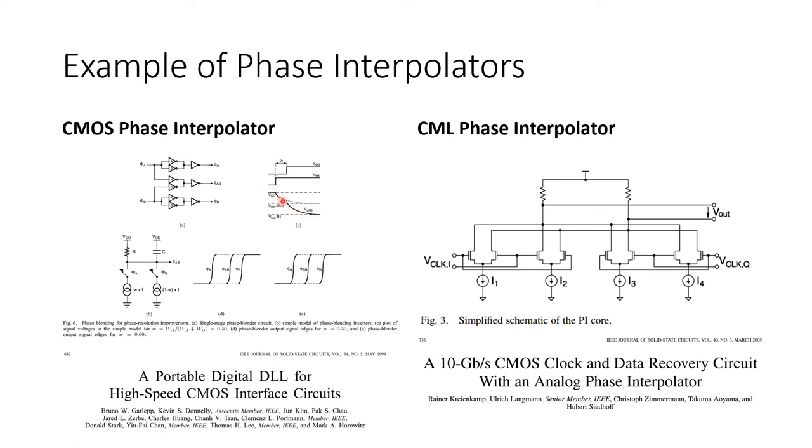So usually this second stage of buffers is used to just clean up the waveform. As you can imagine, it's a little bit messy at this internal node. And in best case scenario, with good matching everywhere, what you end up with is three equally spaced clock phases at the output.